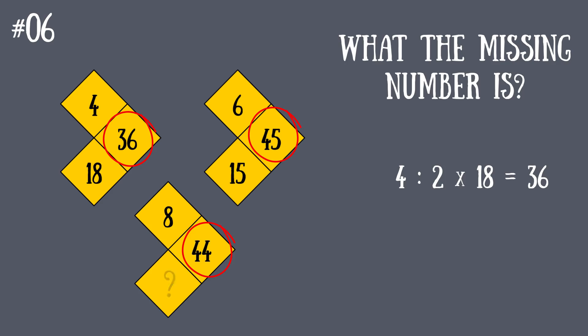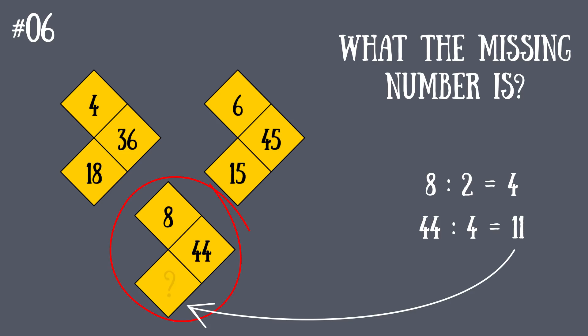The pattern is found. Now let's use it for the arrow we need: 8 divided by 2 is 4; 44 divided by 4 is 11. And that's it—the right number on the bottom arrow is 11.